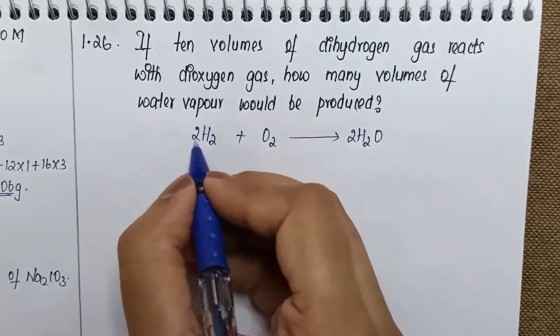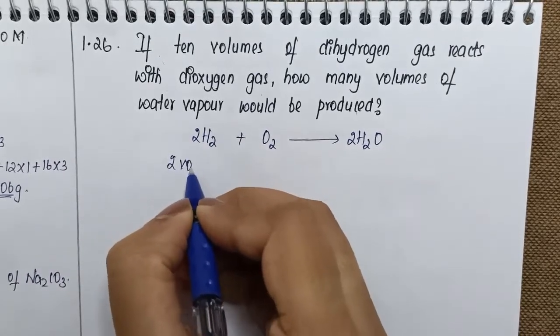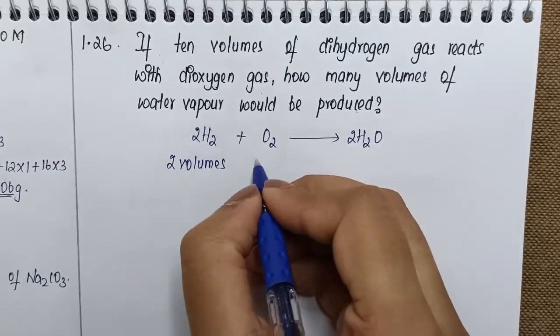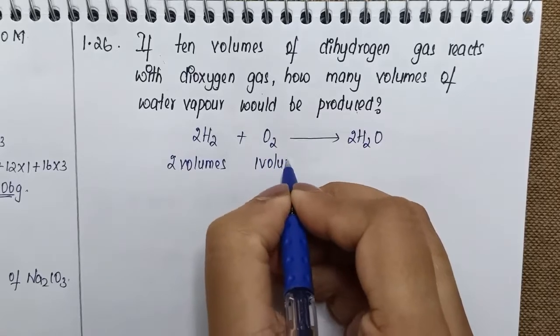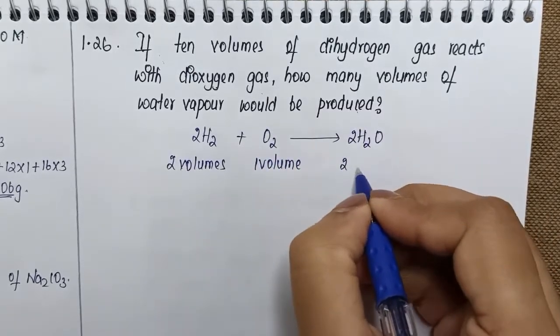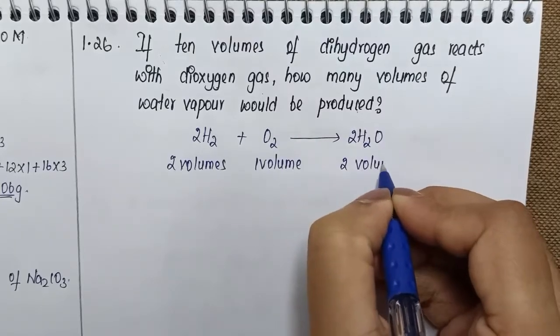We can say two volumes of hydrogen will react with one volume of dioxygen to produce two volumes of water vapor. These are the values you get from the equation after balancing.